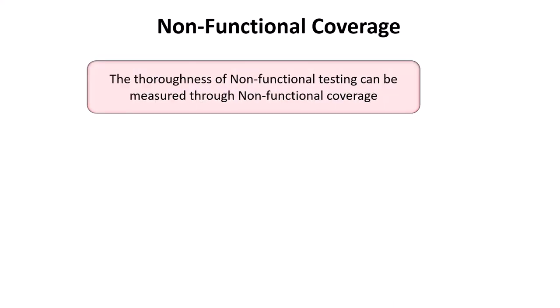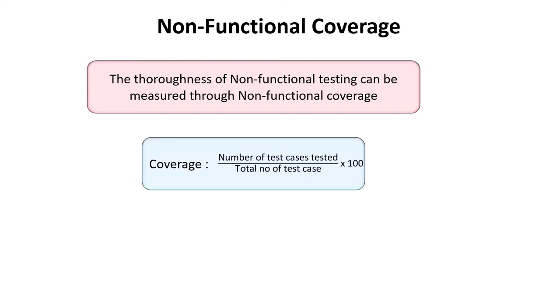At the end of this lecture, we will understand how to calculate non-functional coverage. The thoroughness of non-functional testing can be measured through non-functional coverage. Non-functional coverage is calculated by dividing the number of test cases tested by the total number of test cases and multiplied by 100.